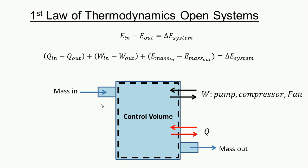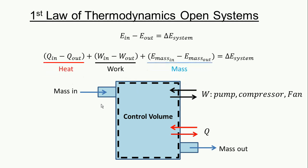An open system energy transfer occurs in three forms: heat, work, and mass. So these are the three things you've got to drill into your head to have a thorough understanding of open systems.